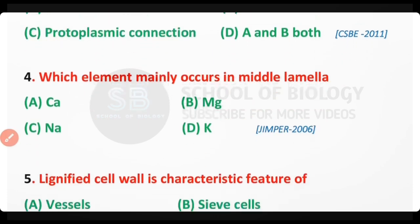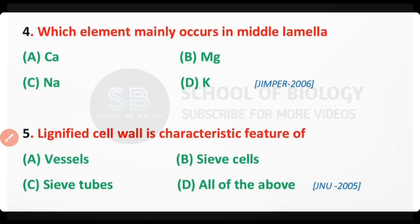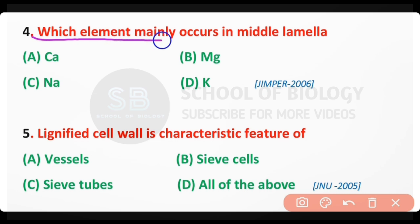Question number four: Which element mainly occurs in the middle lamella? Options: calcium, magnesium, sodium, potassium. The correct answer is option A. Calcium is mainly present in the middle lamella in the form of calcium pectate.